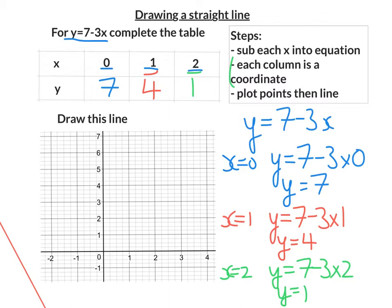Next, remember, each column is a coordinate. So we have the coordinates 0, 7, 1, 4, and 2, 1.